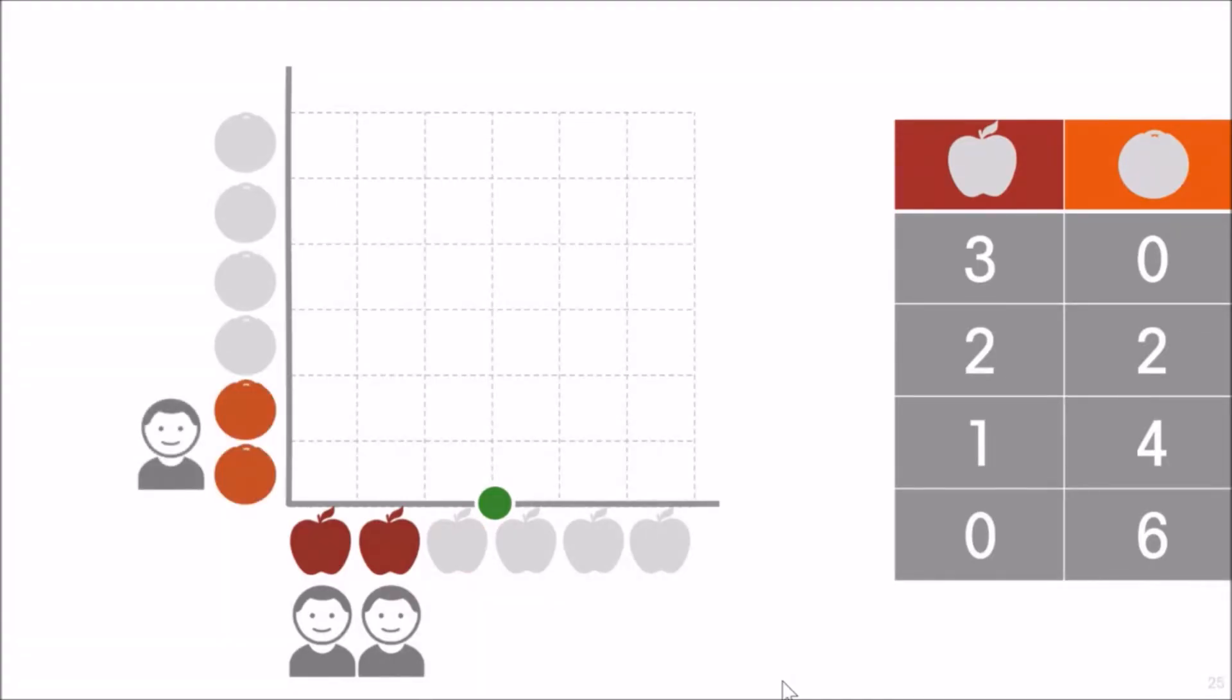Another one is two apples and two oranges, and that's represented by that coordinate. One apple and four oranges is there. And finally, six oranges and no apples.